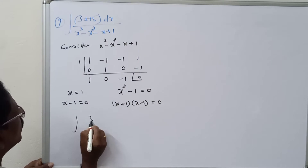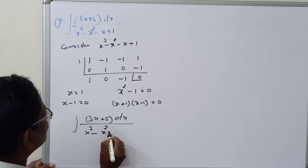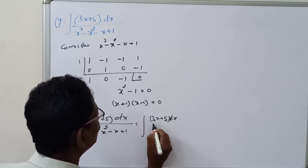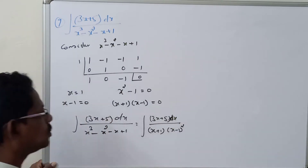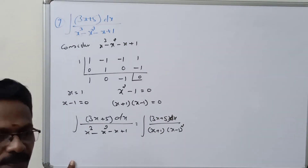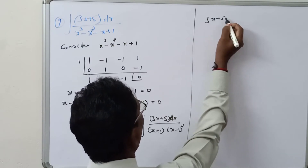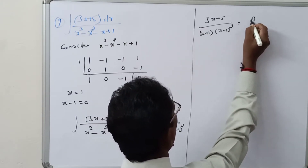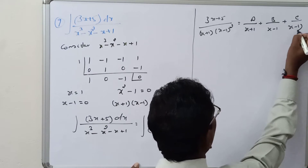Now the equation becomes: integral of (3x + 5) dx divided by (x³ - x² - x + 1), which equals integral of (3x + 5) dx divided by (x + 1)(x - 1)². This is of the second type of partial fractions. So we write: (3x + 5) / [(x + 1)(x - 1)²] = A/(x + 1) + B/(x - 1) + C/(x - 1)².